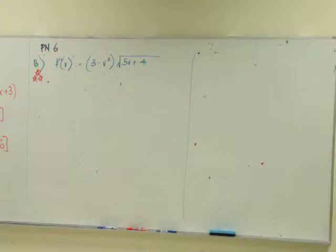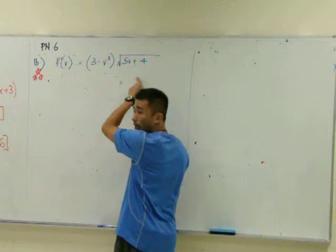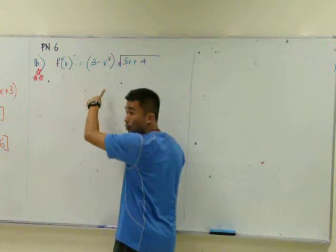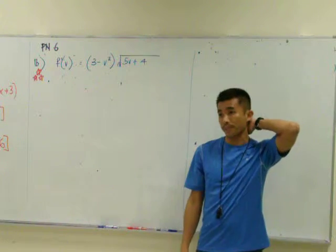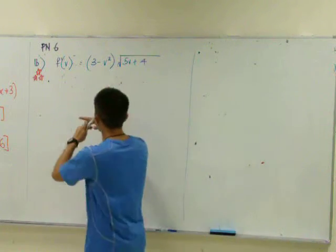Okay, this is a function F in terms of V. You are supposed to find the derivative of this function. Before you can do that, what must we do first? Simplify. Which one? We simplify the square root.